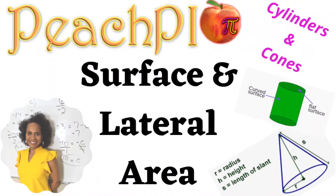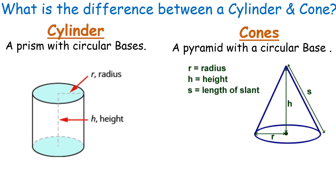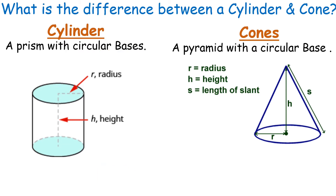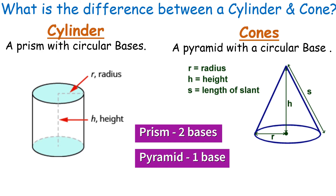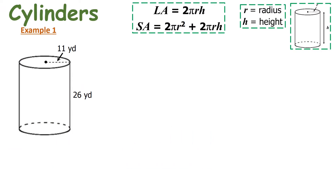In this lesson we're looking at the surface and lateral area of cylinders and cones. A cylinder is a prism with two circular bases — think about a canned good. A cone is a pyramid with a circular base — think about an ice cream cone. Just like a prism has two bases and a pyramid has one base, a cylinder is a prism and a cone is a pyramid.